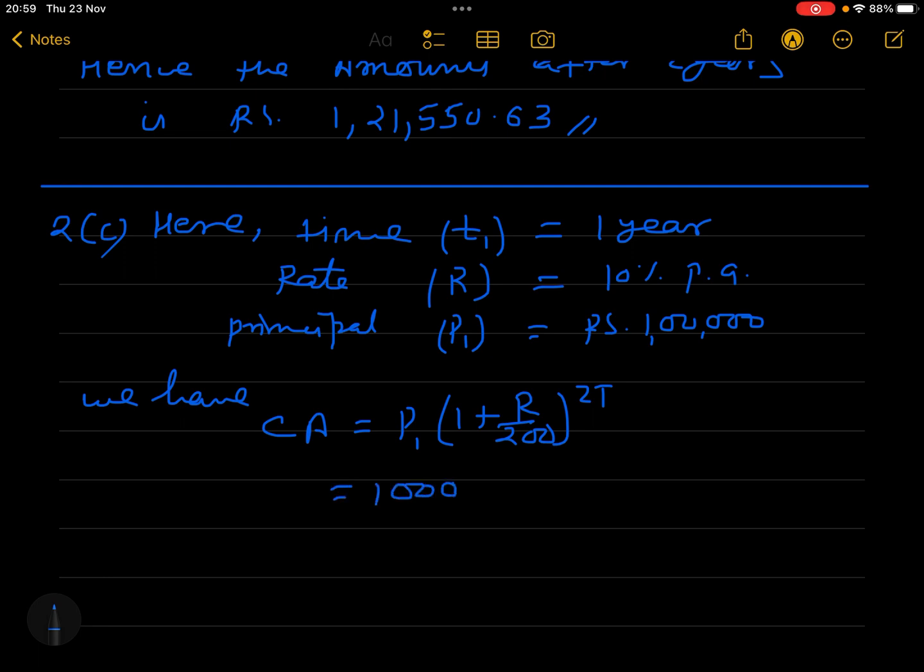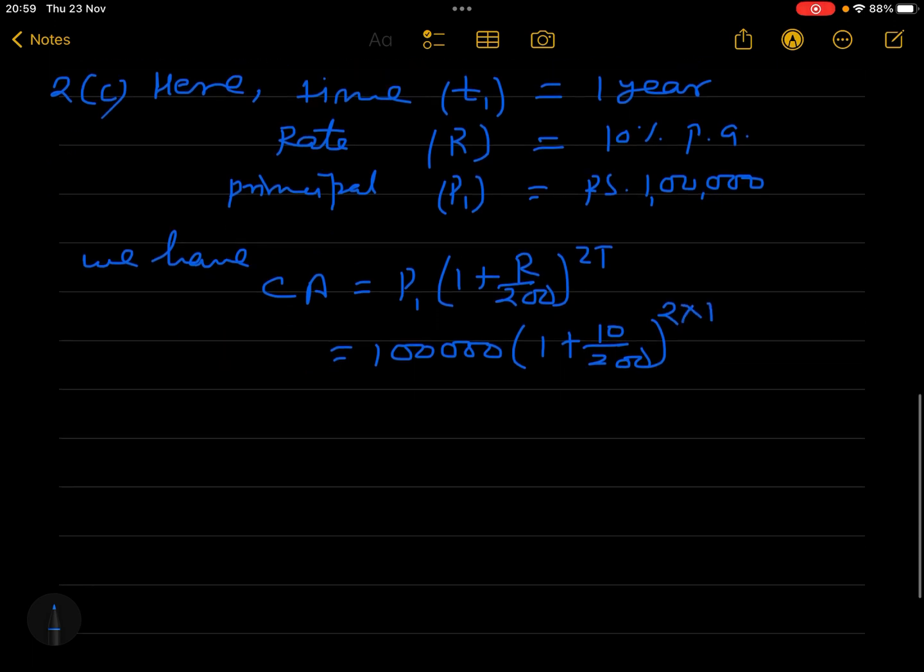In one year, how much amount will he get? We have CA is equal to P times (1 plus R by 200) to the power 2T. So this is 1,00,000 times (1 plus 10 by 200) to the power 2 times 1. This is 1,00,000 times 1.05 to the power 2.